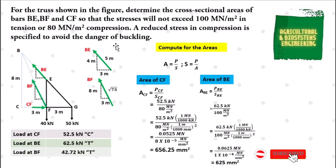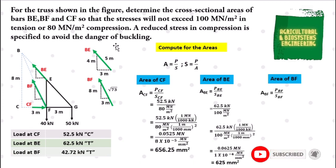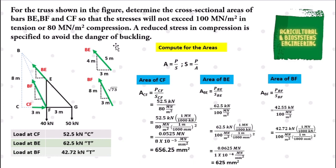Next, we solve for the cross-sectional area of BF using the same formula. We have 42.55 kN divided by 100 MN per square meter, since load BF is a tension force. Converting values the same way as before, the final answer for the cross-sectional area of BF is 427.2 square millimeters.